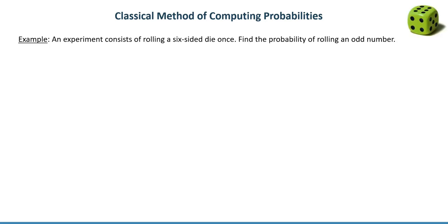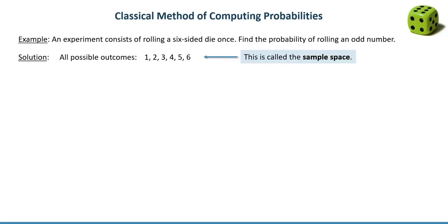An experiment consists of rolling a six-sided die once, and we need to find the probability of rolling an odd number. When we roll a die, all outcomes are equally likely. So what are the possible outcomes? When you roll a six-sided die, you can see one, two, three, four, five, or six, and all those numbers are equally likely to appear. Those numbers are all possible outcomes in general — this is called the sample space.